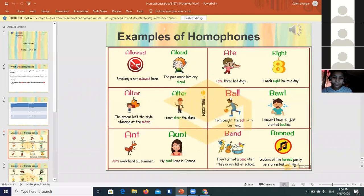'Ball', like a basketball, spelled B-A-L-L double L. 'Ant' is a small insect, and 'aunt' is your mother's sister or father's sister. 'Band' is a team that does music, spelled B-A-N-D. 'Banned' means something you cannot do, spelled B-A-N-N-E-D.